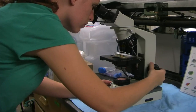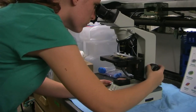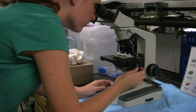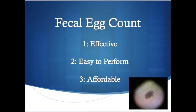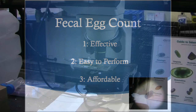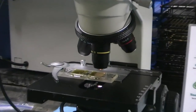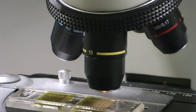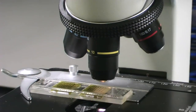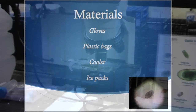A fecal egg count, or FEC, utilizes a microscope to estimate the amount of eggs in a known quantity of feces. This procedure is usually effective, easy to perform, and relatively affordable for all sizes of operations. The procedure explained in this video is a modified McMaster technique, which is the most common method.